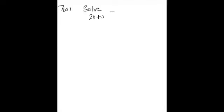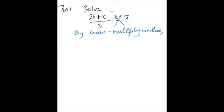Solve 20 plus x over 3 is equal to 7. In order to do that, we need to move the 3 to the right hand side. We can do that by cross multiply method.